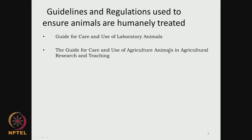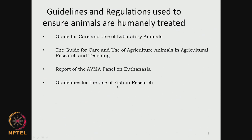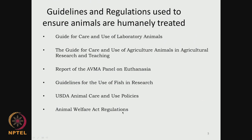The guide for care and use of agricultural animals in agriculture research and teaching covers animals like sheep, goat, and so on. Report for the AVMA panel on euthanasia covers how animals have to be sacrificed as humanely as possible without causing pain. There are also guidelines for the use of fish in research, animal welfare act regulations, and public health service policy - a lot of guidelines available both in Europe and in the USA.